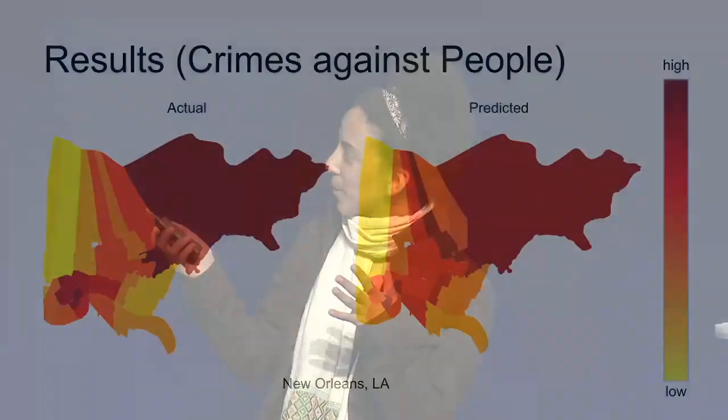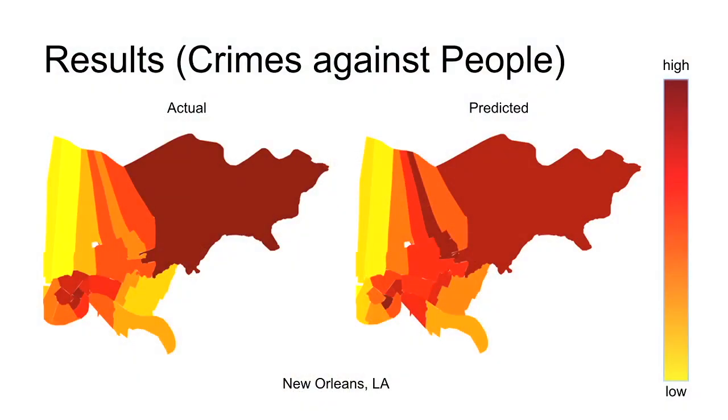We could predict things like demographic characteristics, voting patterns, etc. One of the things we were doing is we were saying we could predict crime rates. On the left you can see the actual crime rates and on the right you can see predicted ones.